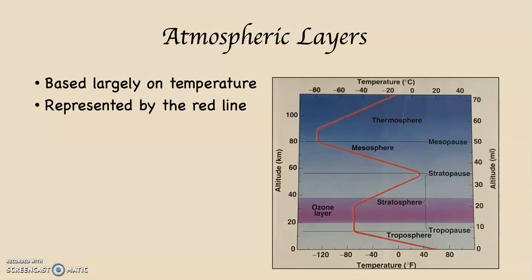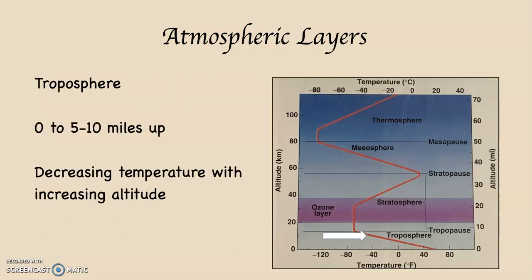On the right-hand side, you can see altitude in miles: 0, 10, 20, 30, 40, 50, 60, 70 miles up above the surface of the planet. If you take a look at that red line, down towards the surface where zero's at, as you're increasing altitude, notice how the red line is going to the left, which means decreasing air temperature. If you can see that, you'll understand the entire graph.